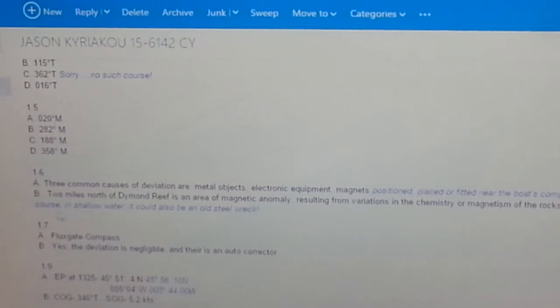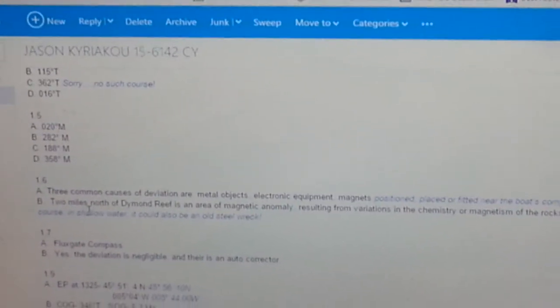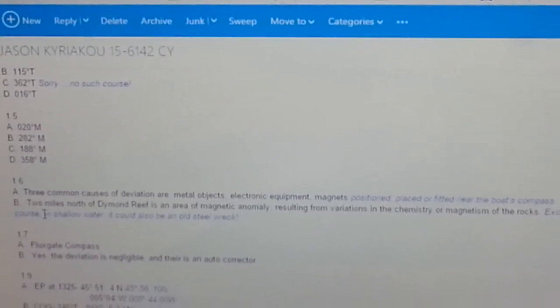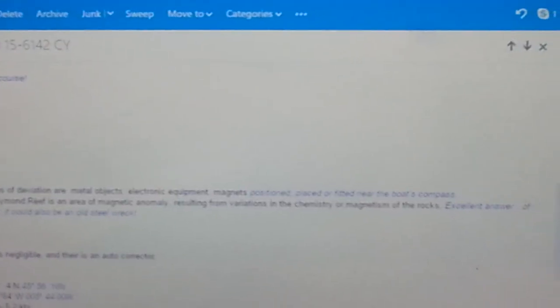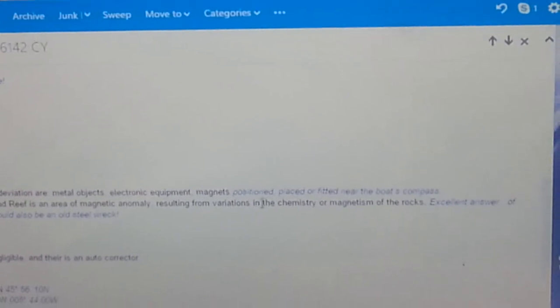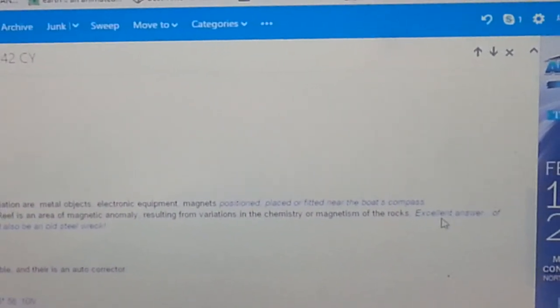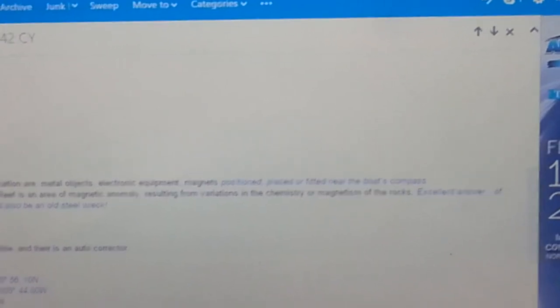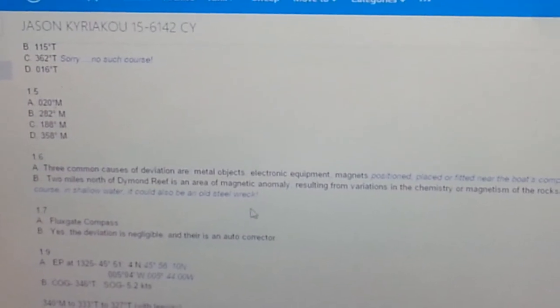And then 1.6 B, that magnetic anomaly that I talked about and I showed you on the charts. I put 'two miles north of diamond reef is an area of magnetic anomaly resulting from variations in the chemistry and/or magnetism of the rocks.' And then he put in 'excellent answer. Of course in shallow water it could also be an old steel wreck.' So that's cool to know too. I wouldn't have thought of that.